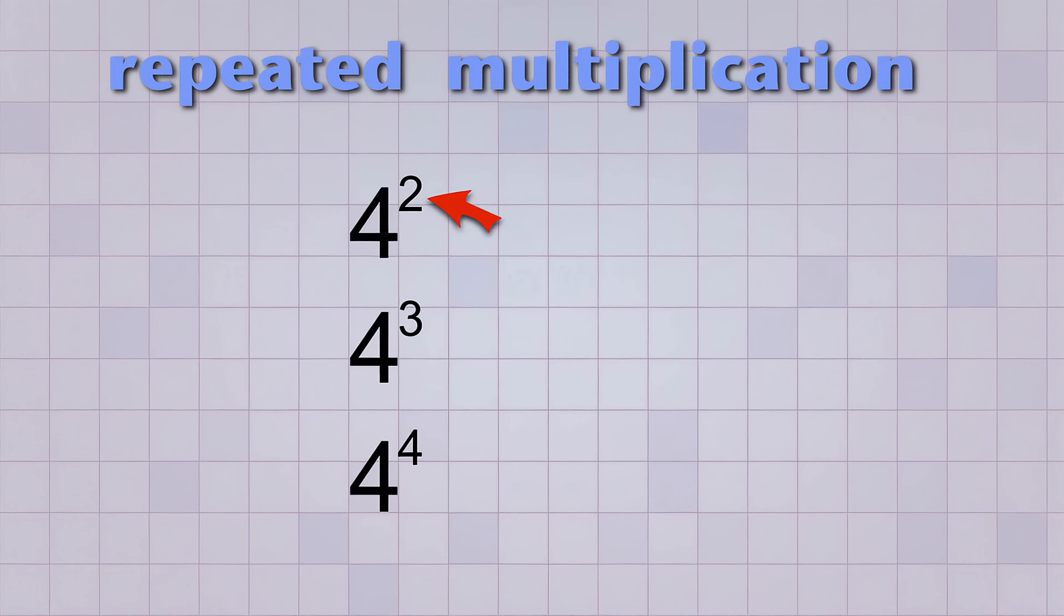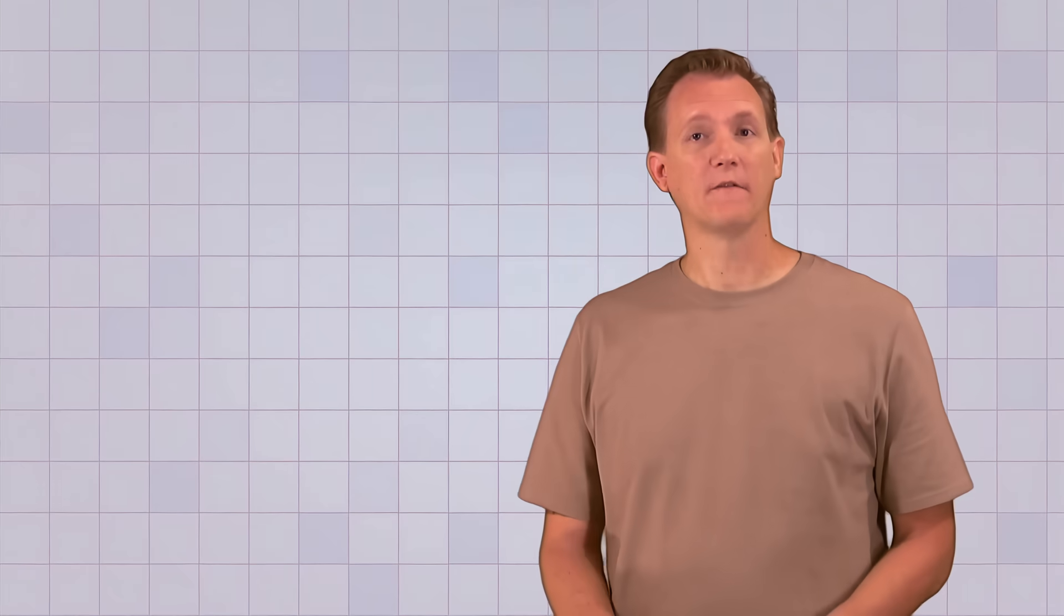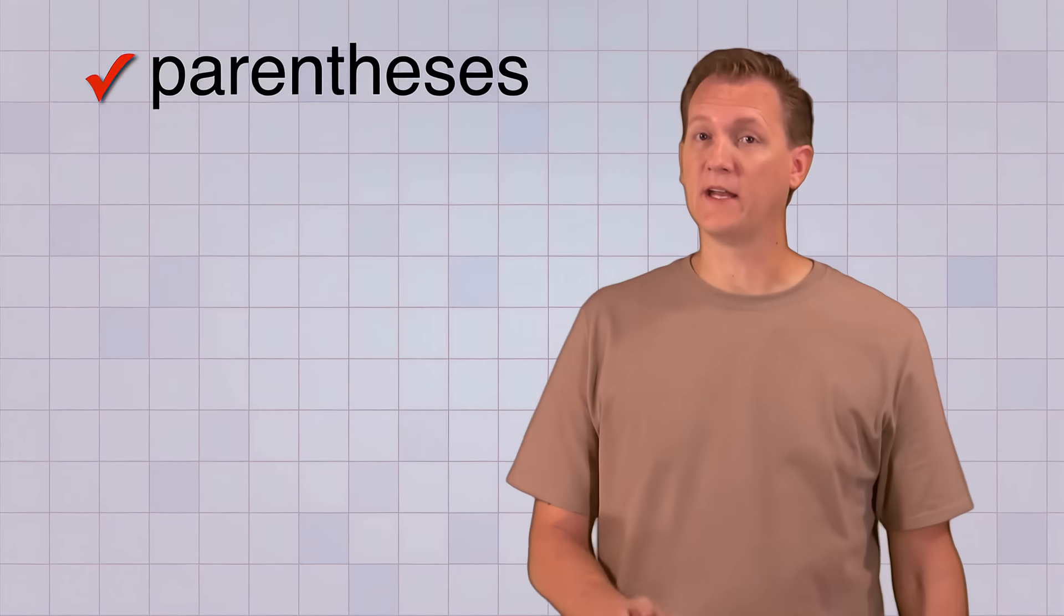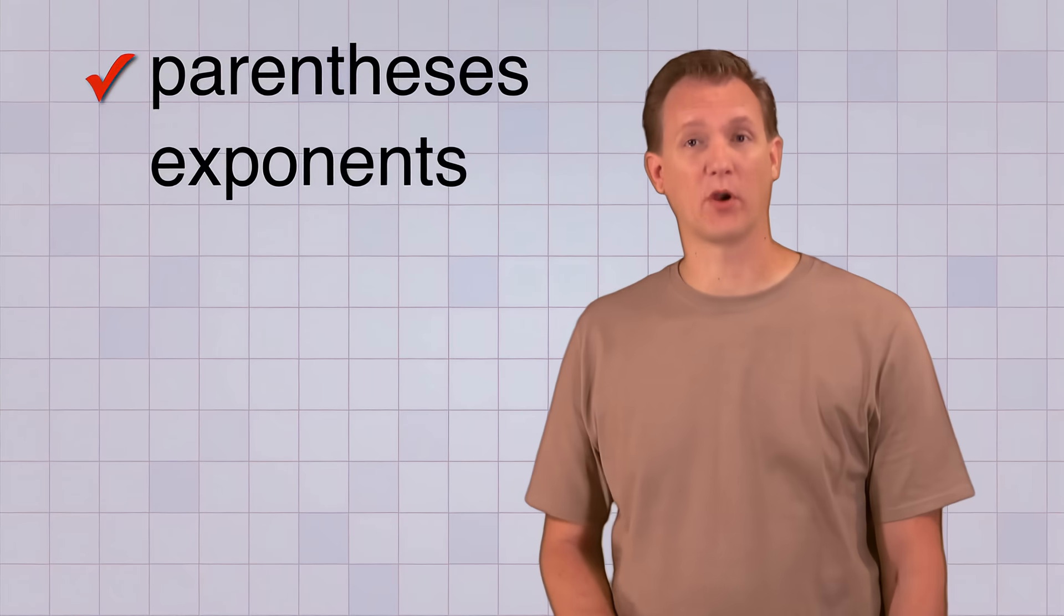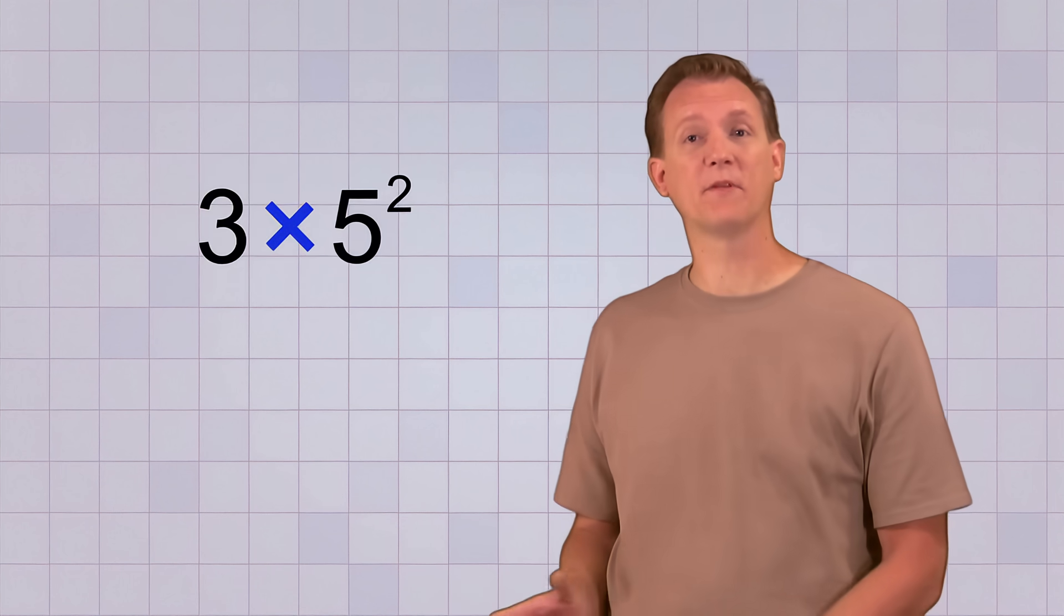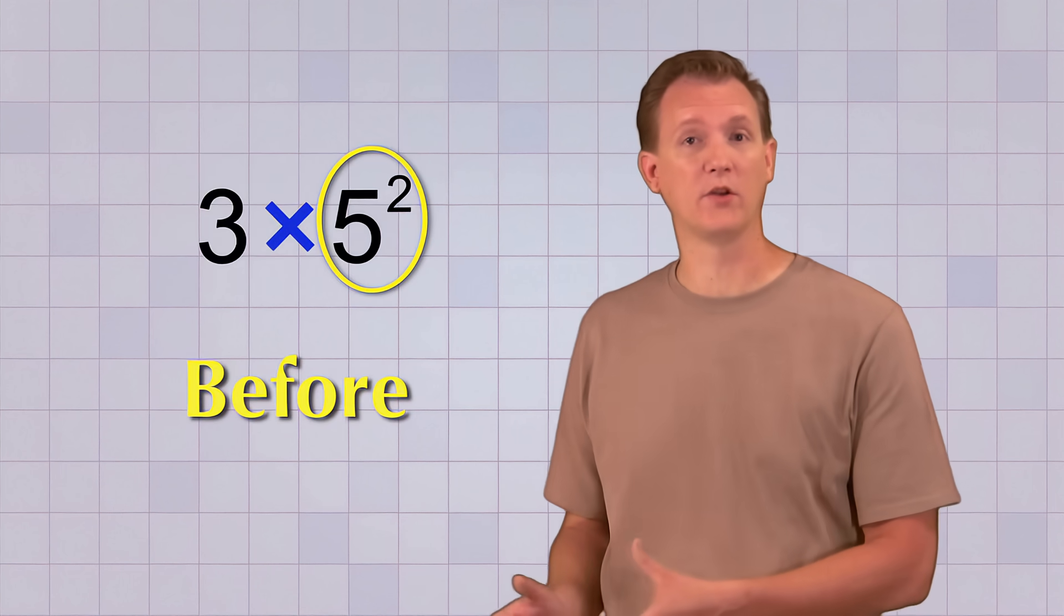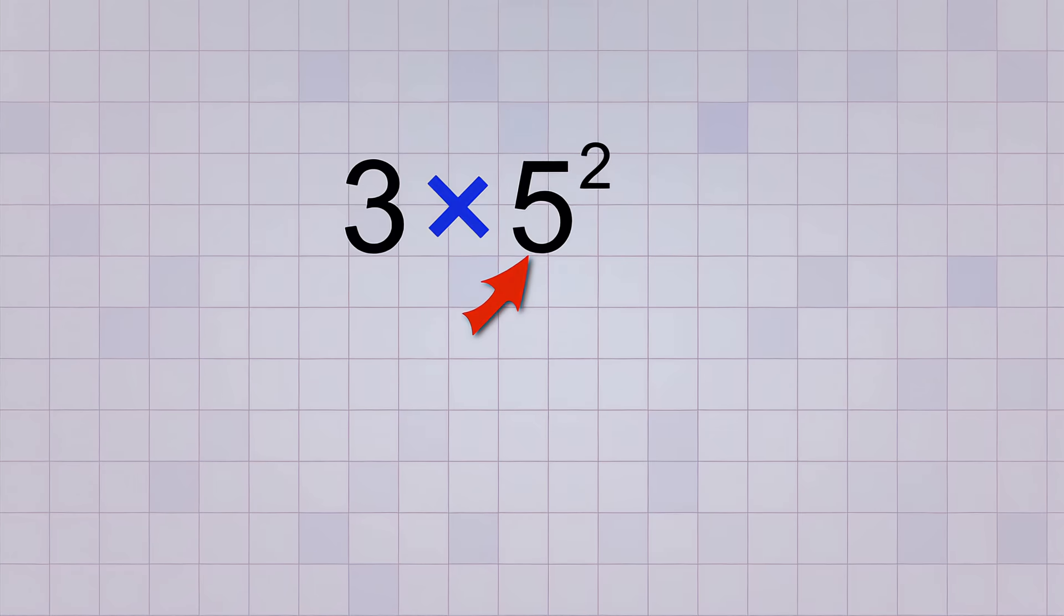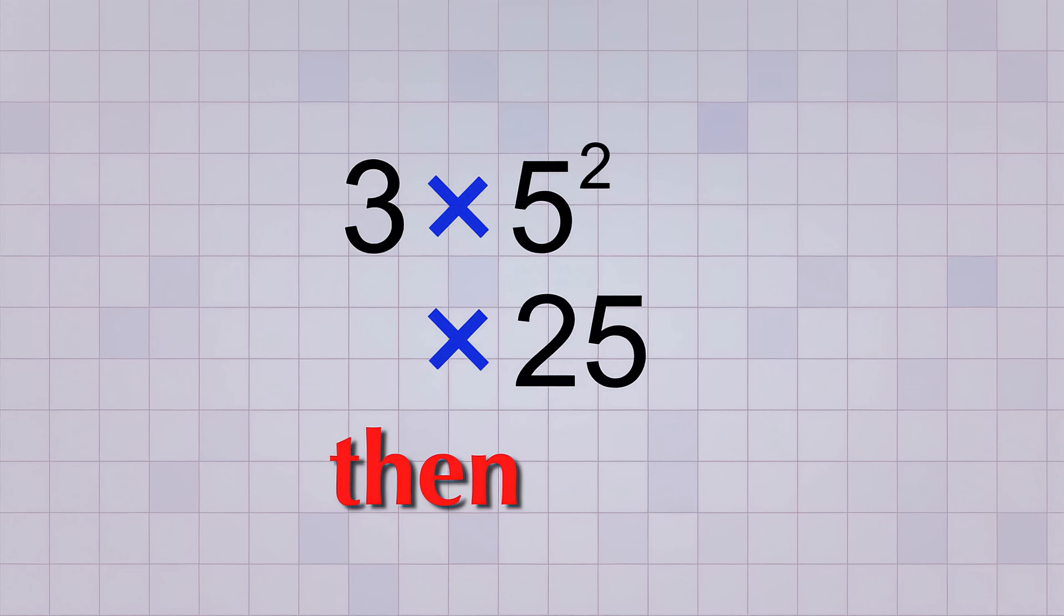This small number is called an exponent, or power. It just tells you how many times to multiply the bigger number together. So after we take care of any parentheses, simplifying any exponents becomes the next highest priority. For example, in this problem, we have to simplify the exponent before we can do the other multiplication. The exponent is telling us to multiply 5 together twice. So 5 times 5 is 25. And after we do that, then we multiply the result by 3. So 25 times 3 is 75.